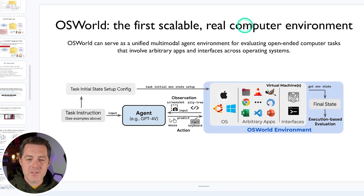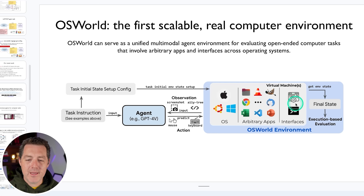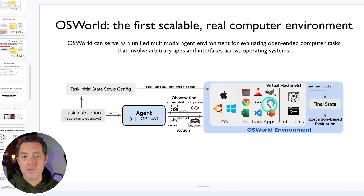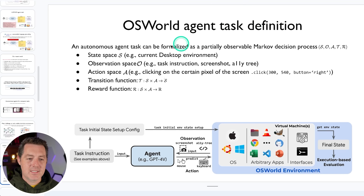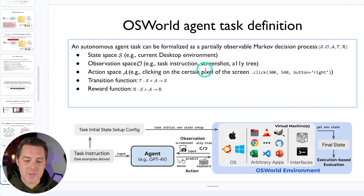That's where OS World comes in — the first scalable real computer environment. OS World can serve as a unified multimodal agent environment for evaluating open-ended computer tasks involving arbitrary apps and interfaces across operating systems. An autonomous agent task is formalized as a partially observable Markov decision process, with a state space representing the current desktop environment, an observation space including the instruction, screenshot, and accessibility tree, and an action space for what the agent can actually do — such as clicking.